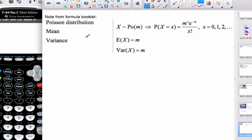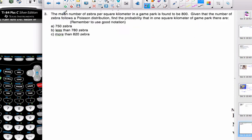From our formula booklet, we know that X is a Poisson with m as our parameter, which is the mean. The variance is also the same as the expected value, E(X) = Var(X) = m, which is an interesting phenomenon. Let's move on to a problem.